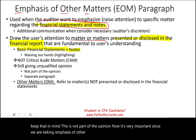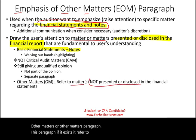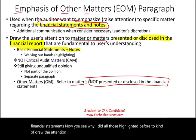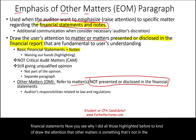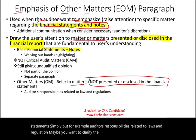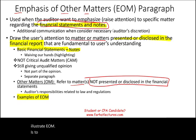Now it's very important, since we are talking about emphasis of other matters, to understand what the 'other matters' paragraph is. This paragraph, if it exists, refers to matters not presented or disclosed in the financial statements — and that's why I highlighted that distinction before. Other matters refers to something that is not in the financial statements. For example, clarifying the auditor's responsibility related to laws and regulations — that has nothing to do with the financial statements themselves.